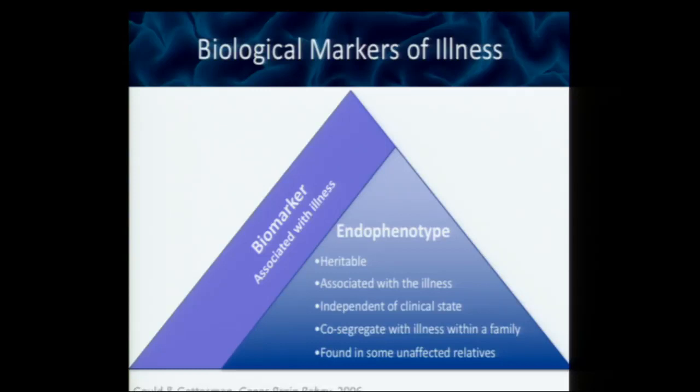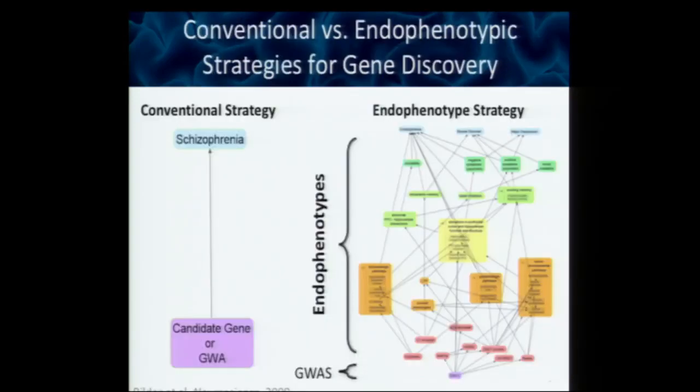What is an endophenotype? We can think about it in how the strategy works. You have a conventional strategy versus an endophenotype strategy. For a conventional study, you take something like schizophrenia, take the diagnosis — schizophrenia yes or no — query the genome, and you're done.